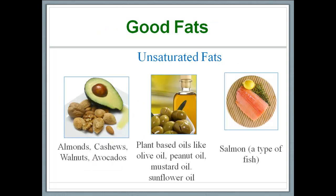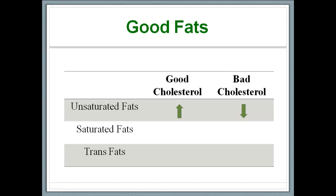That is exactly what unsaturated fats do. Unsaturated fats are present in plant products like nuts and avocados, and also in fish like salmon. What unsaturated fats do is increase the good cholesterol and decrease the bad cholesterol — good on both counts. The recommendation is that you should choose unsaturated fats over saturated fats wherever possible.